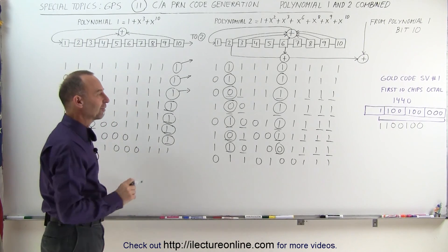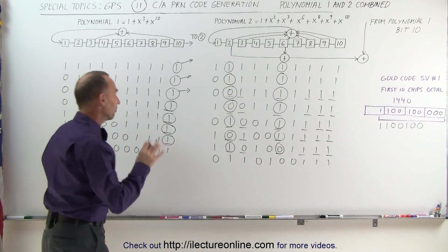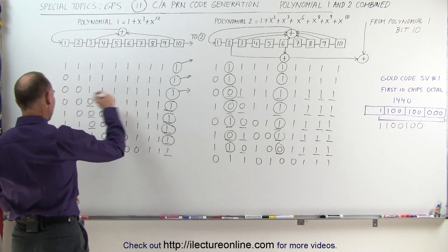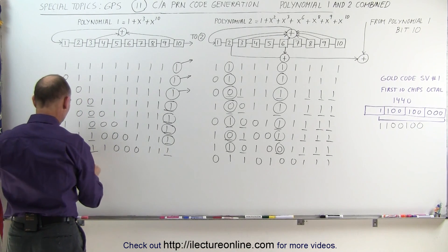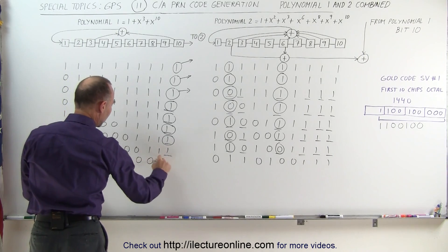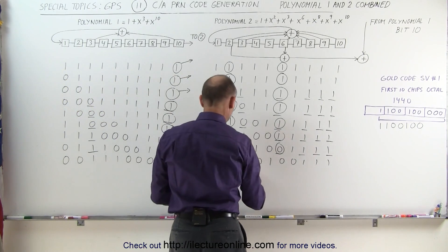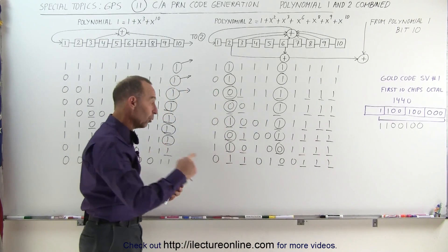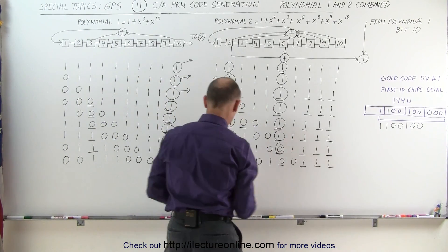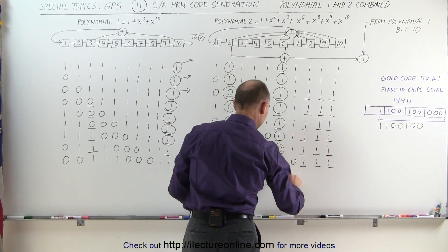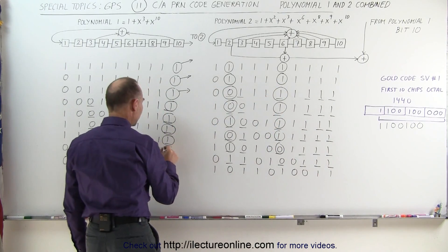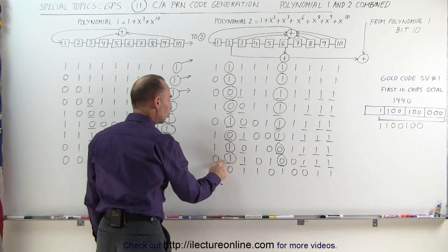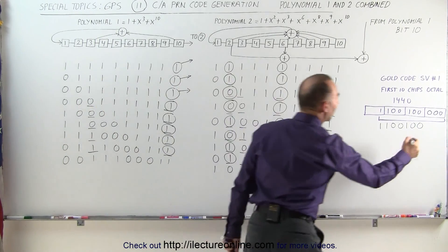This is all a very small fraction of a second — each chip takes about 1 millionth of a second. Continuing on: we grab 3 and 10 — both 1s, that's 2, even, puts a 0 in the first position, everything else shifts over. We grab the 2nd, 3rd, 6th, 8th, 9th, and 10th position — that's 5, odd — becomes a 1, goes into first position, everything else shifts. We grab the 10th bit from polynomial 1, the 2nd from polynomial 2, the 6th from polynomial 2: 1 plus 1 is 2, plus 0 stays 2 — even — becomes 0. That's our next chip.